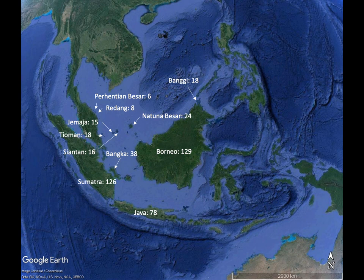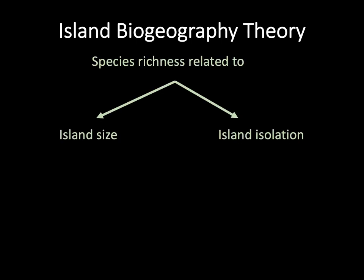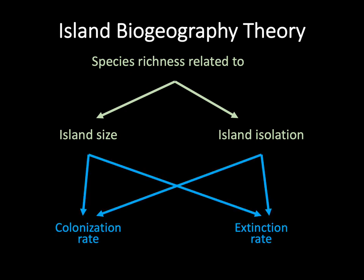But within a single group of islands that share roughly the same climate, other factors must be driving variation in species richness. This is exactly the question that grabbed the attention of two ecologists, E.O. Wilson and Robert MacArthur. They theorized that the size and the isolation of islands would strongly determine how many species occur on those islands, particularly through the effect of island size and isolation on colonization and extinction rates. Their ideas were formalized as the equilibrium theory of island biogeography.